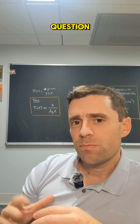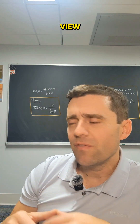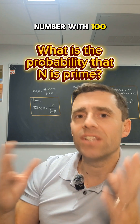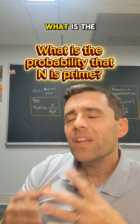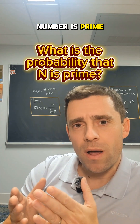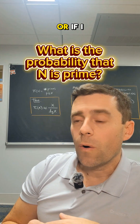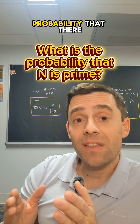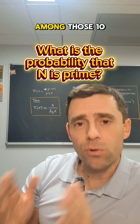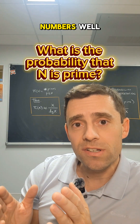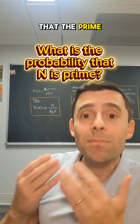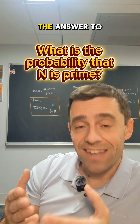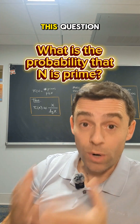How about we ask the same question but from a probability point of view? If I give you some very large number with 100 digits, what is the probability that that number is prime? Or if I give you 10 numbers in a row, what is the probability that there is a prime number among those 10 numbers? It turns out that the prime number theorem essentially also gives you the answer to this question.